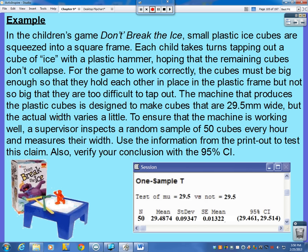The machine that produces the plastic cubes is designed to make cubes that are exactly 29.5 millimeters wide, but the actual width varies a little. To ensure that the machine is working well, a supervisor inspects a random sample of 50 cubes every hour and measures their width. Use the information from the printout to test this claim. Also, verify your conclusion with the 95% confidence interval.